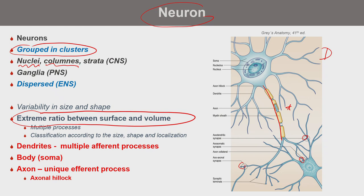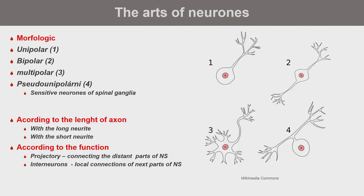Columnae are found in the spinal cord and brain, and strata are layers in the telencephalon. Neurons fire synapses and axons — this is the most important consumer of energy. Even if neurons are unipolar, multipolar, or pseudo-unipolar, they require very high energy.